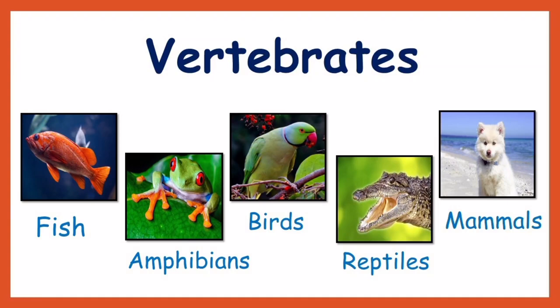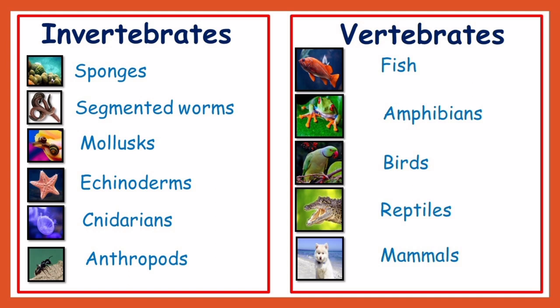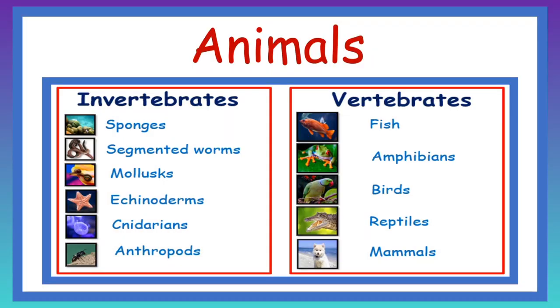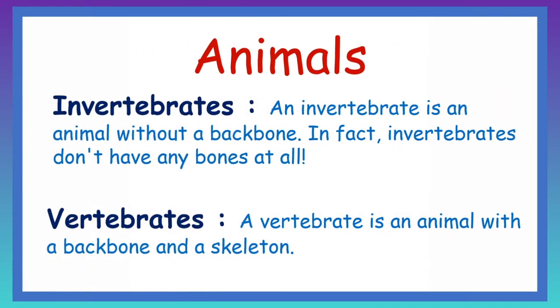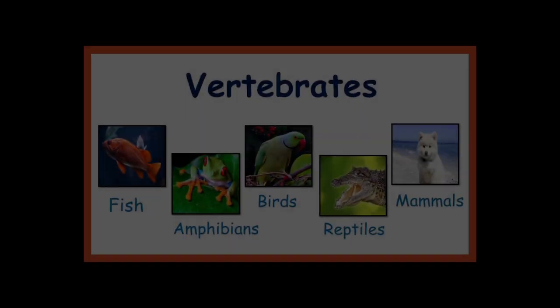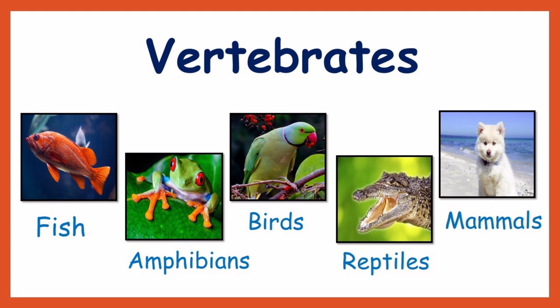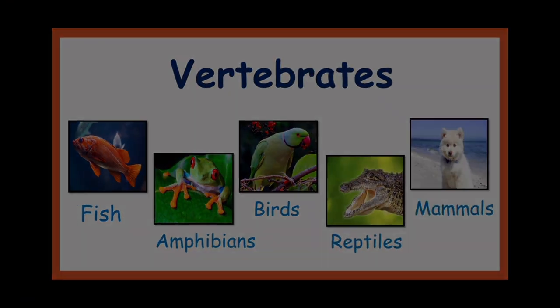In this video we are going to see what vertebrates are. Animals are classified into two types: invertebrates and vertebrates. Invertebrates are animals without a backbone — in fact, invertebrates don't have any bones at all. A vertebrate is an animal with a backbone and a skeleton. Animals that have a backbone and skeleton are fish, amphibians, birds, reptiles, and mammals. Let us see one by one.